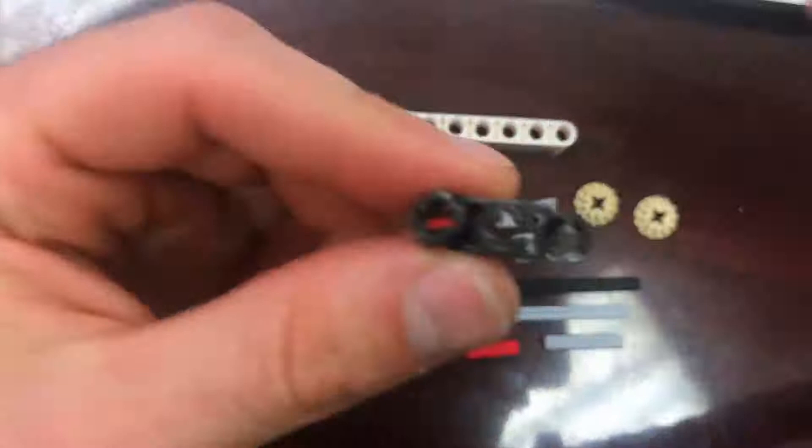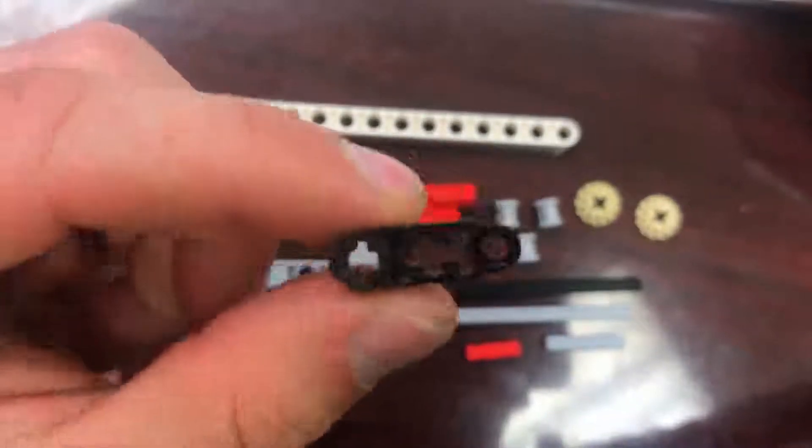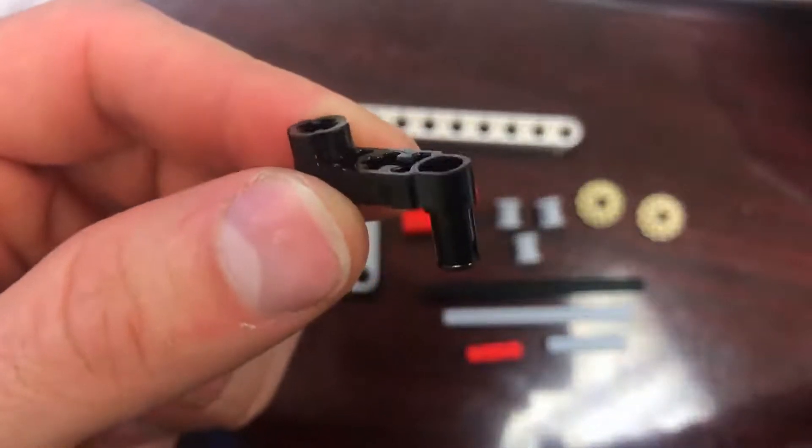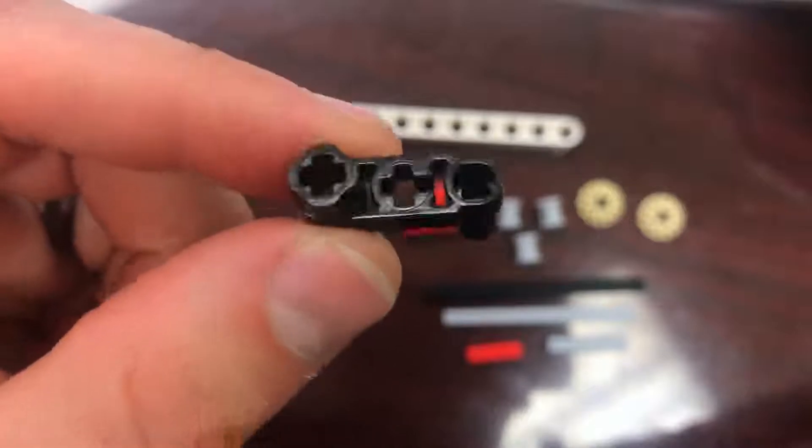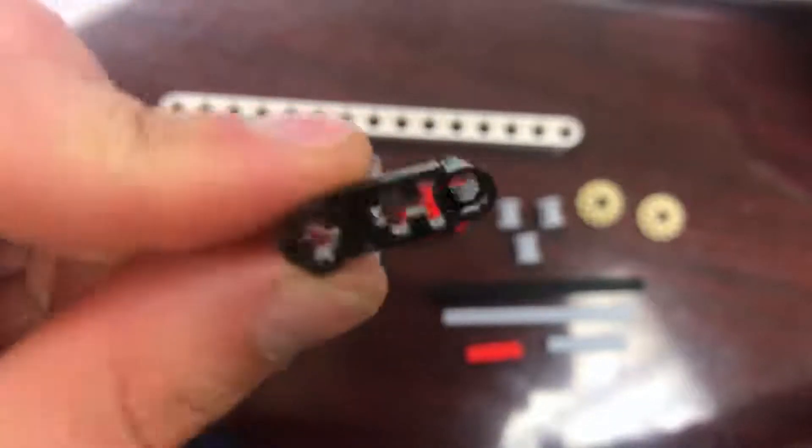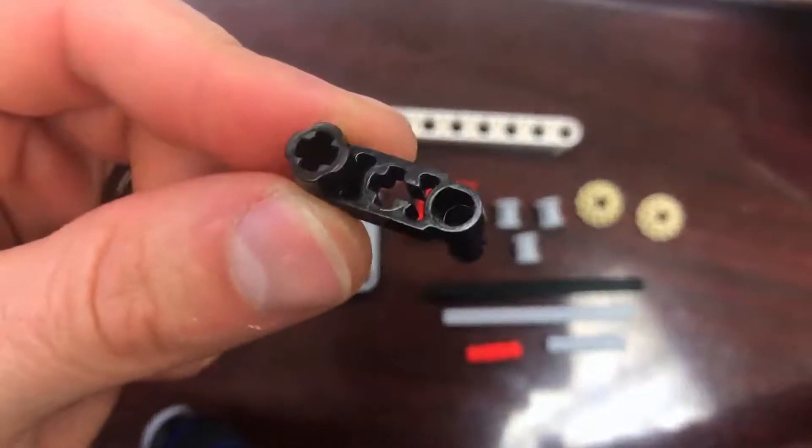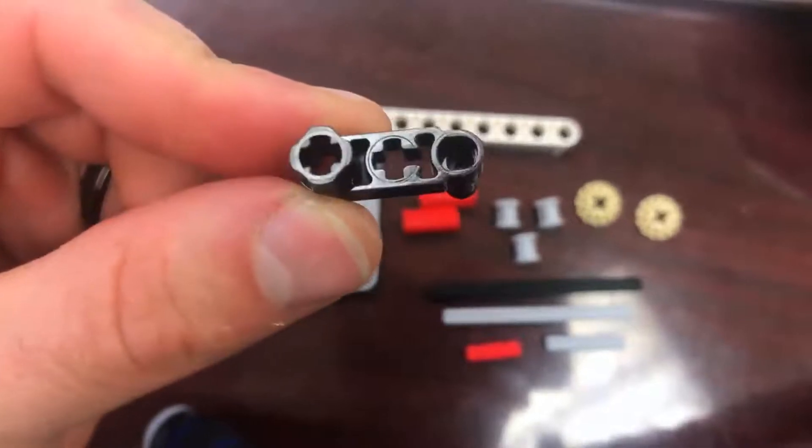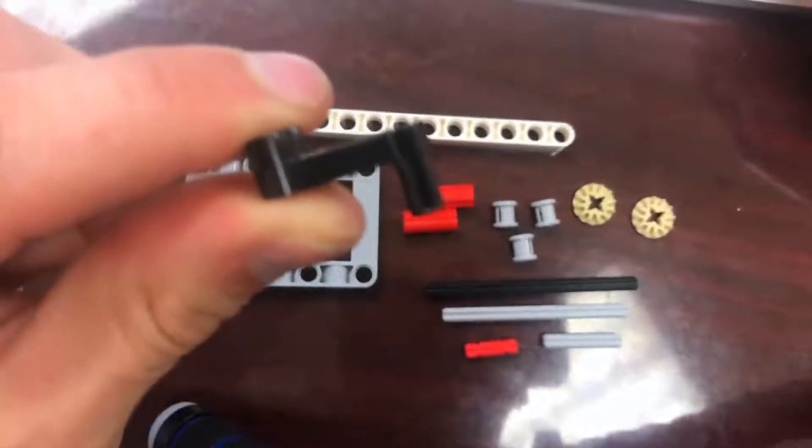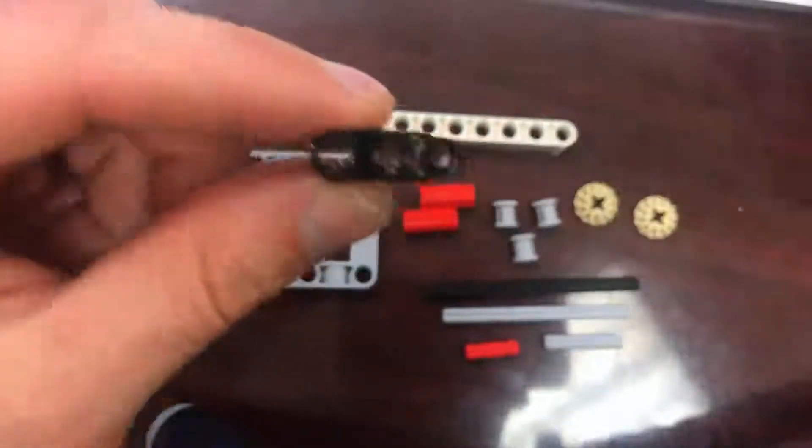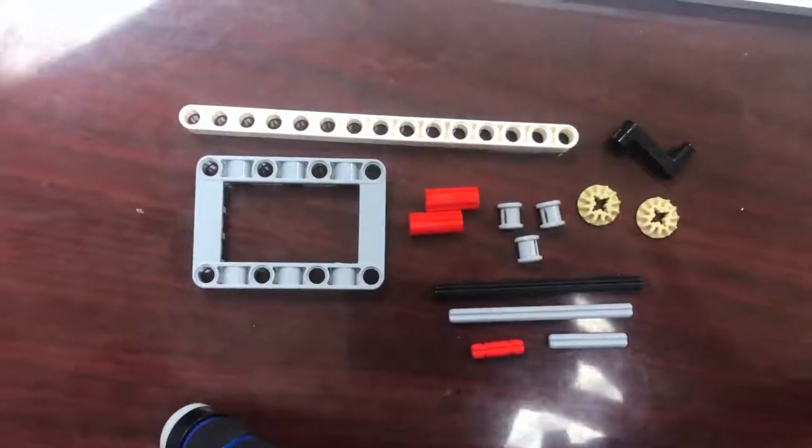And one of these pieces. This piece comes in the First Lego League kit, the education base kit from Lego Education. It is an axle on one side sticking out and a peg on one side sticking out. It's a one-of-a-kind piece - they're very valuable. All right, let's get started.